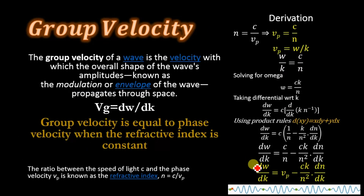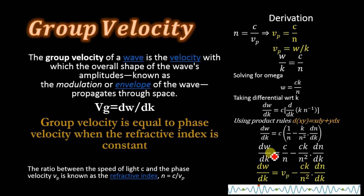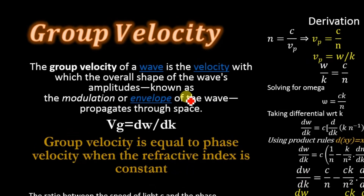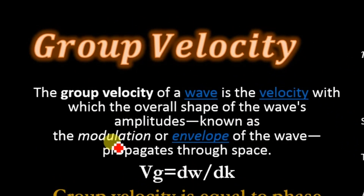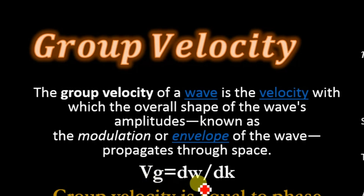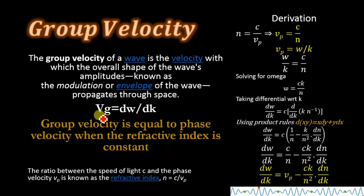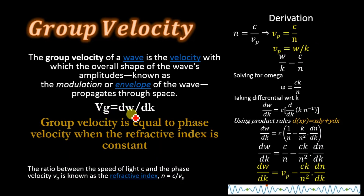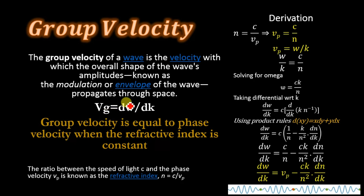Now, what is the group velocity? The group velocity of a wave is the velocity with which the overall shape of the wave's amplitude — known as the modulation or envelope — propagates through space. Mathematically, the group velocity is vg = dω/dk. Note that phase velocity was vp = ω/k, but group velocity is expressed in differential form as dω/dk.